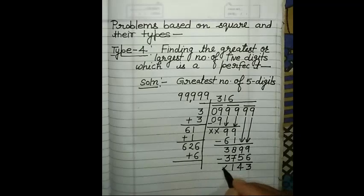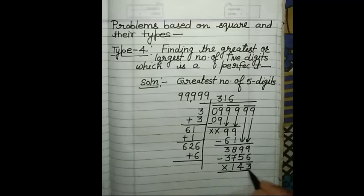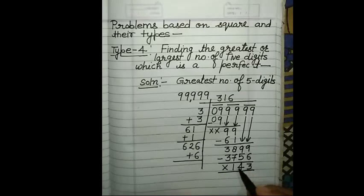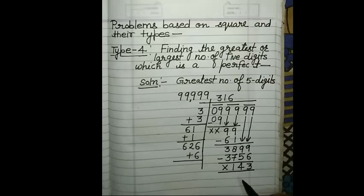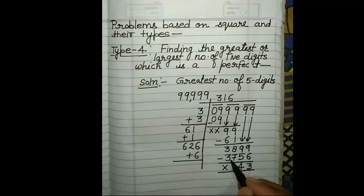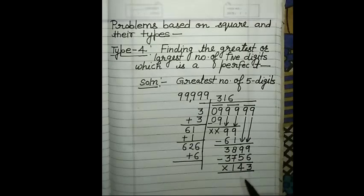In yesterday's video, when we were finding the least number, the product was greater than the dividend — meaning we had to take the remainder as negative. But in the case of finding the greatest number, the number should not be greater than the dividend. That's why we take a value lower than this.